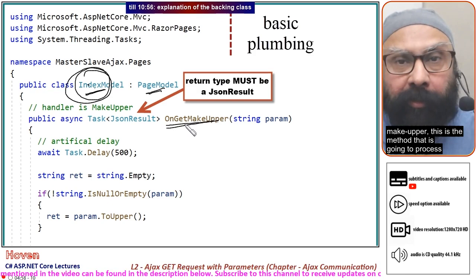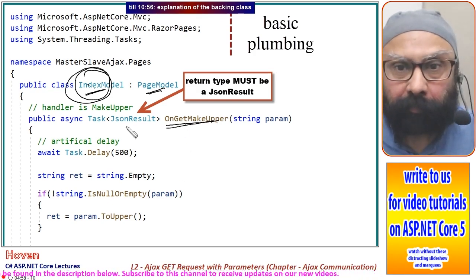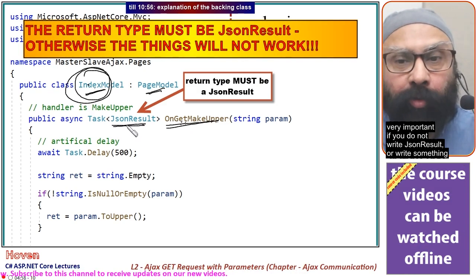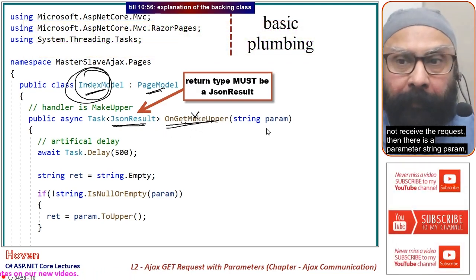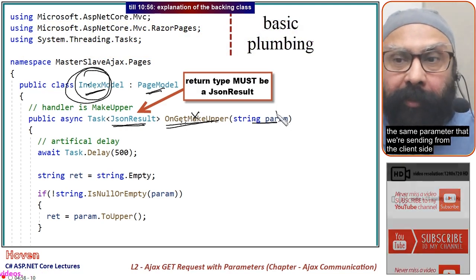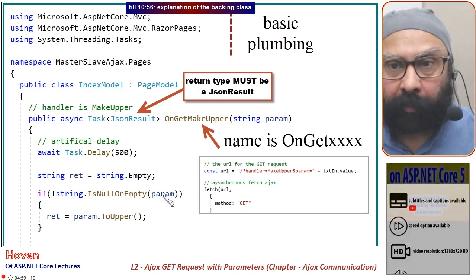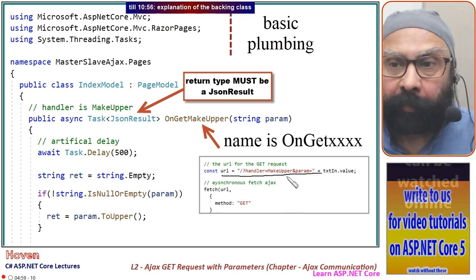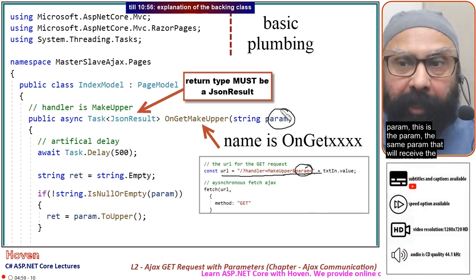This method will process the request coming from the client side. The return type of this method must be JsonResult - this is very important. If you don't write JsonResult or write something else like IActionResult, this method will not receive the request. Then there is a parameter string param, the same parameter we're sending from the client side.